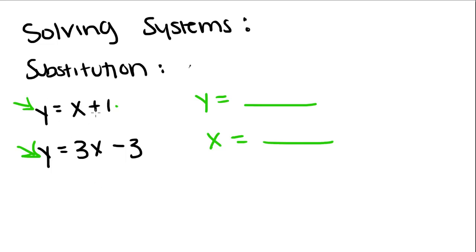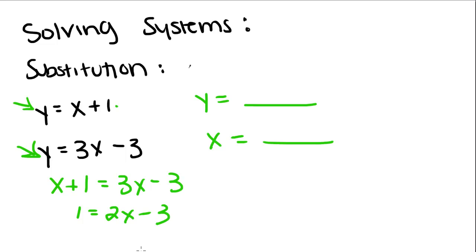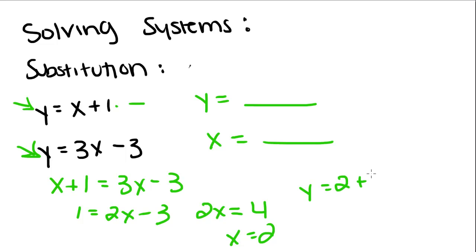If I substitute x plus 1 for y into this equation, I'm going to get x plus 1 equals 3x minus 3. If I bring the x over, I get 1 equals 2x minus 3. If I add the 3 over, I get 2x equals 4, and x equals 2. But you have to make sure you keep going until you get an ordered pair. So now we plug this x value into either equation — I'll use y equals x plus 1, so y equals 3. Our solution for the system of equations is (2, 3).